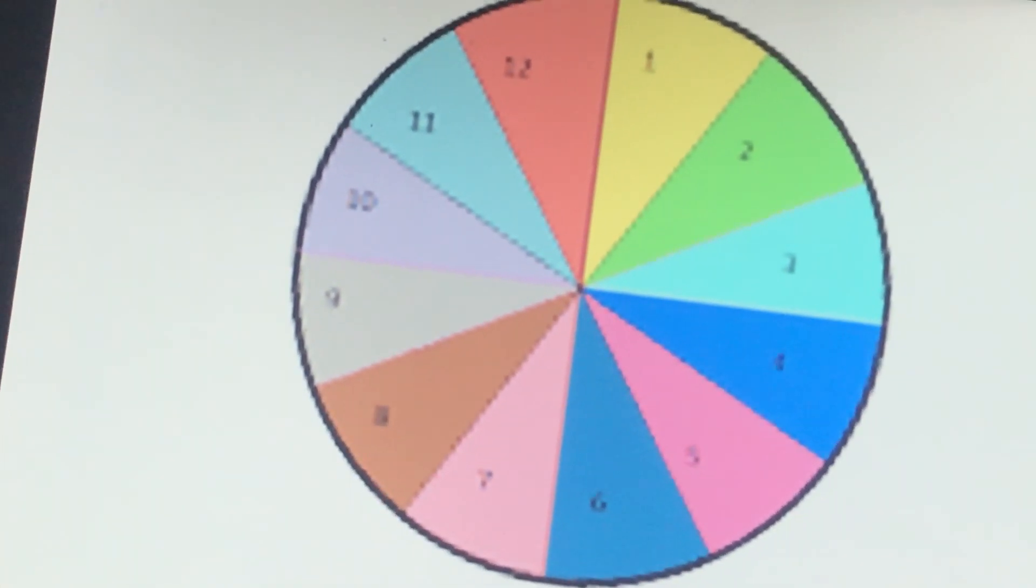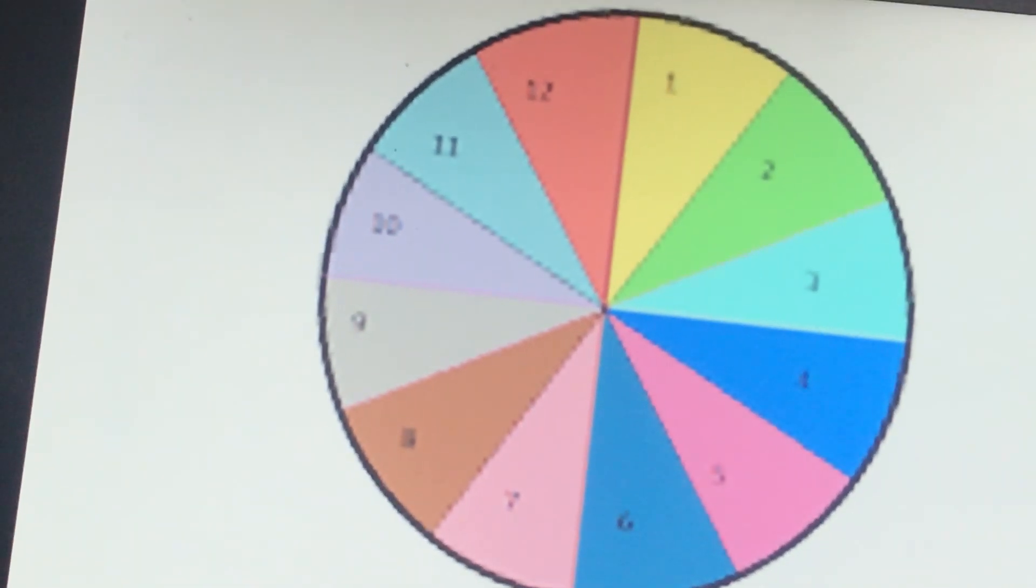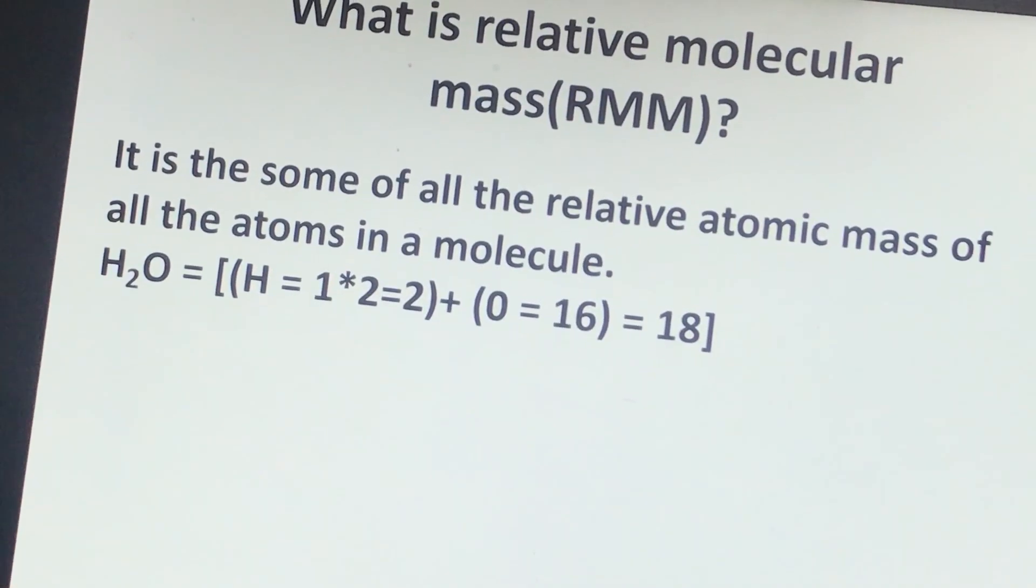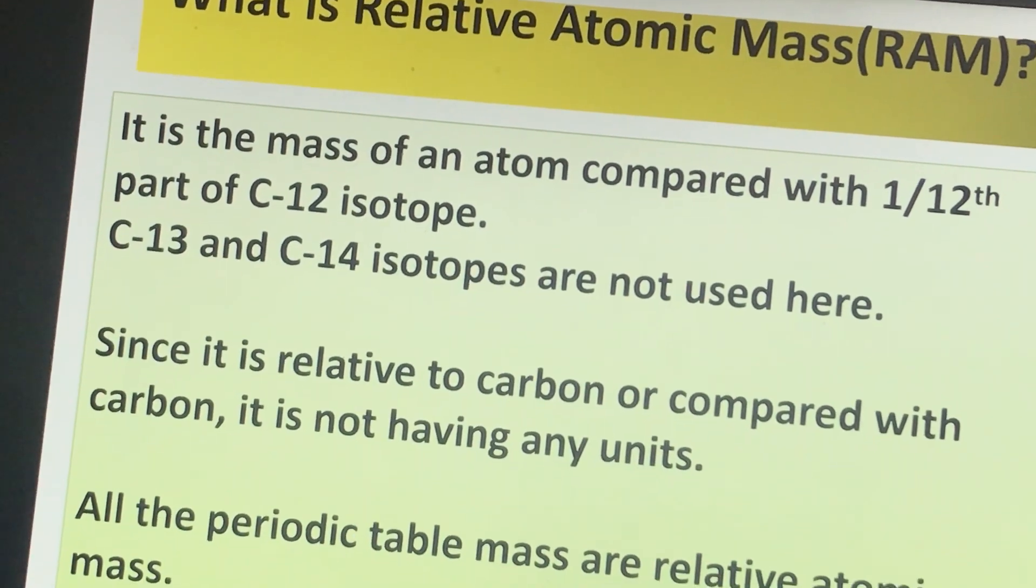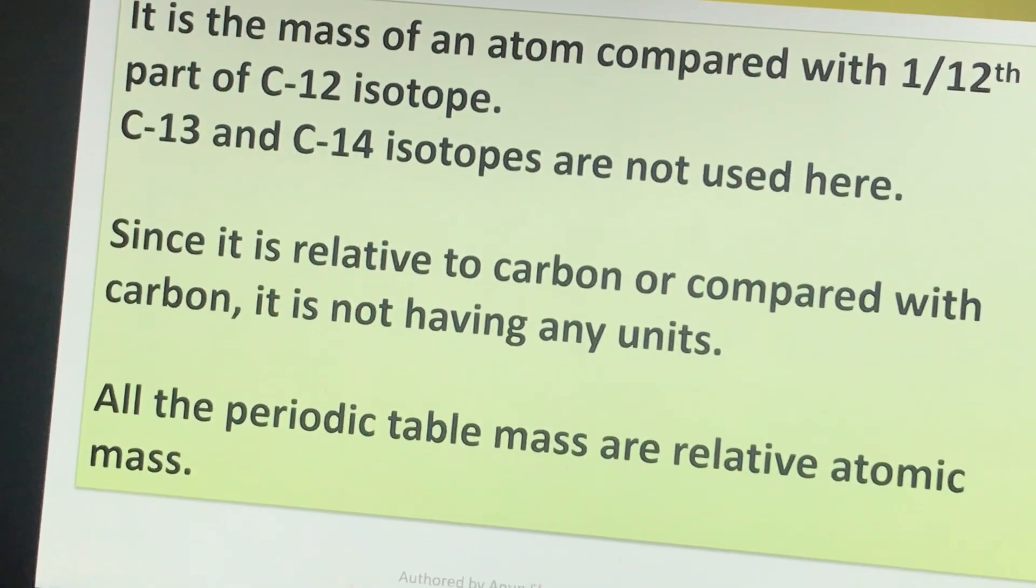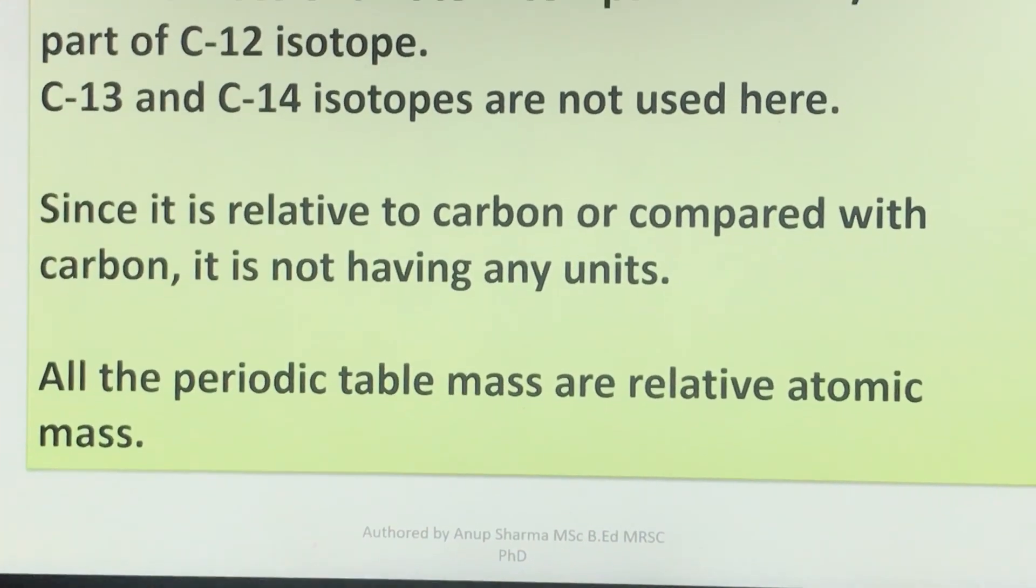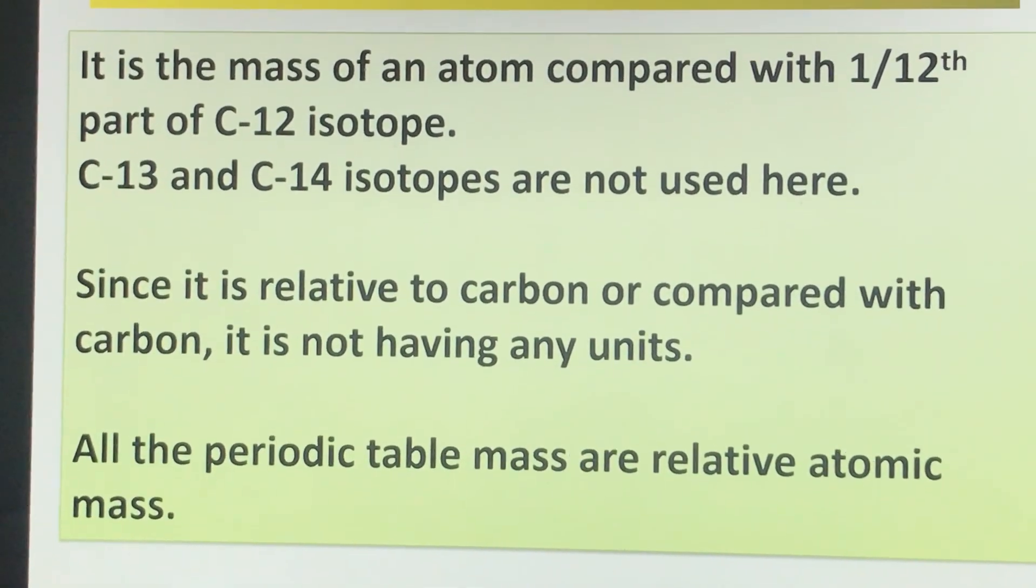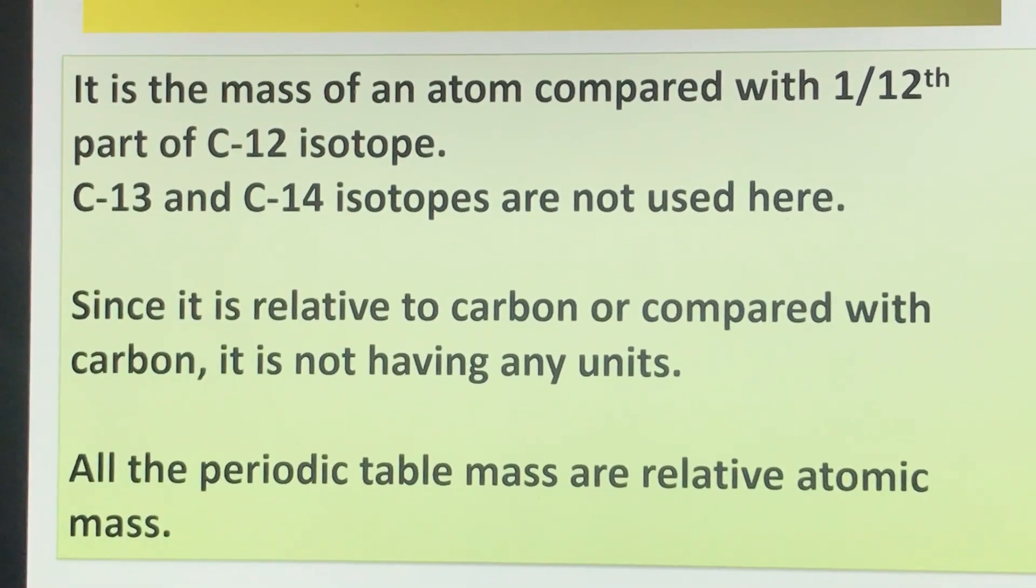We compare carbon-12 isotope with different atoms. All the periodic table masses are relative atomic masses. If you see the periodic table, all the masses given are relative atomic mass and that is without unit.